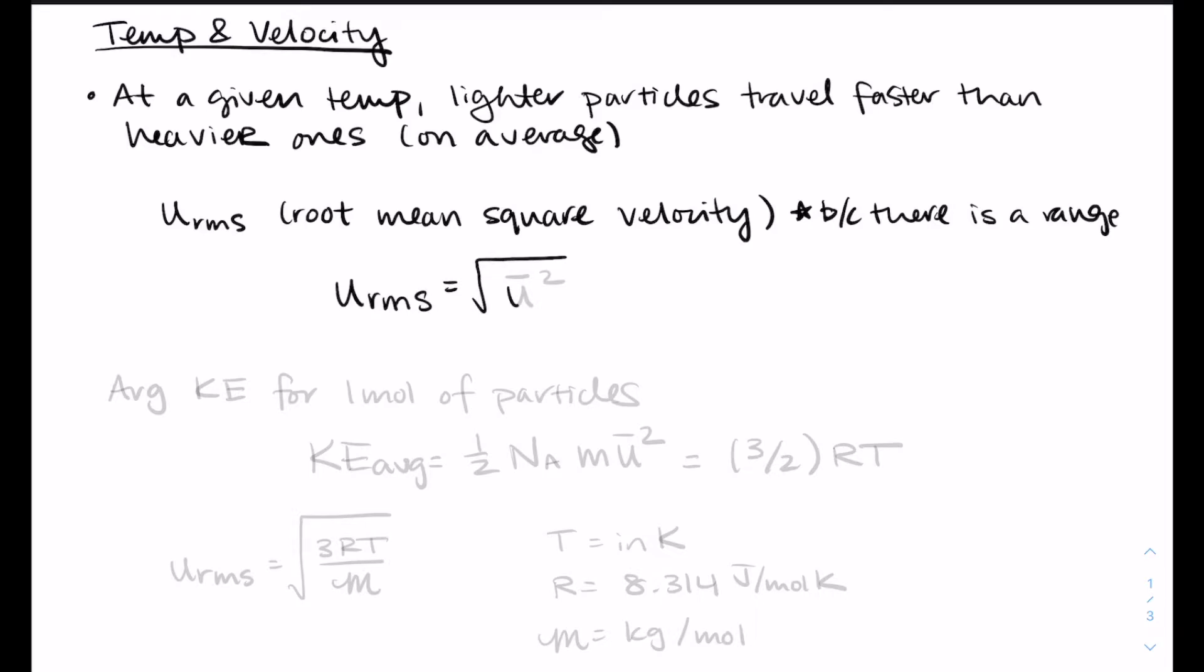The average kinetic energy for one mole of particles, so we can bring in some Avogadro's number. It looks like it gets more complicated, but then it simplifies out, which is really kind of nice. This average kinetic energy is one half Avogadro's number times the mass times the mean velocity squared. So that's one half mv squared, but with Avogadro's number in there.